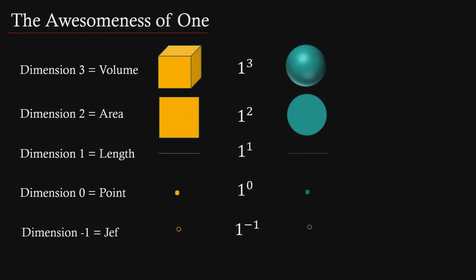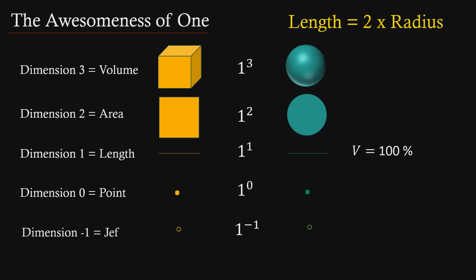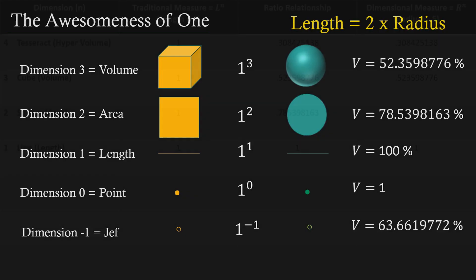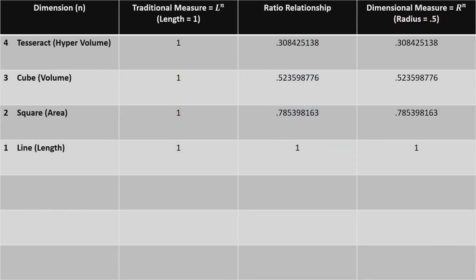The connection between traditional measurement using squares and the dimensional measurement using the volume of balls happens at dimension 1, with its direct ratio relationship of 2 times the radius equals length. Most of us would remember this ratio relationship as the diameter being twice the radius in a circle. Shown here are the other ratio relationships for each dimension. The significance being that the square shape in traditional measurement with a length of x will have a ratio relationship with the volume of a ball in dimensional measurement with a radius of 1 half of x. This is an extremely useful tool.